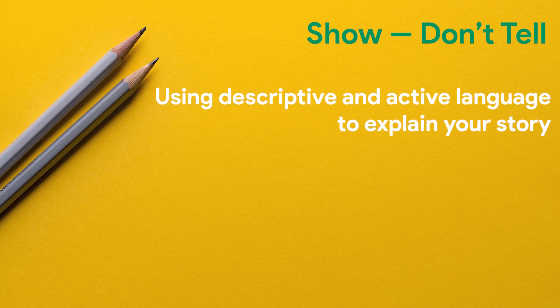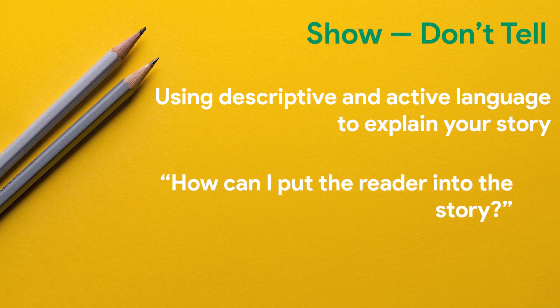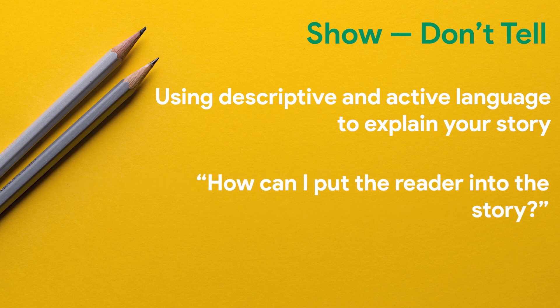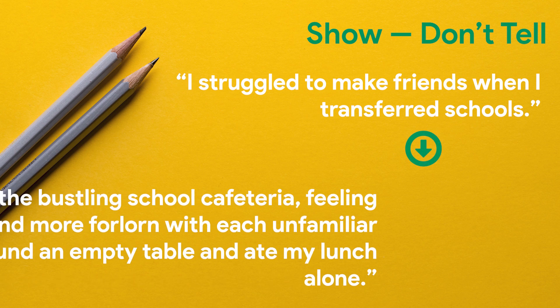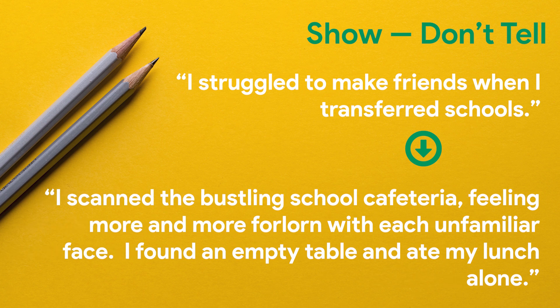Strategy one: Show, don't tell. By this, we mean using descriptive and active language to explain your story or show what you're talking about. Another way to think about this is by asking yourself, how can I put the reader into the story? For example, instead of saying 'I struggled to make friends when I transferred schools,' you can show your emotions by writing: 'I scanned the bustling school cafeteria, feeling more and more forlorn with each unfamiliar face. I found an empty table and ate my lunch alone.' This places the reader into the situation and creates a clear image.